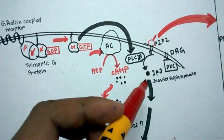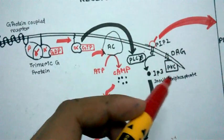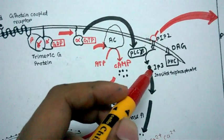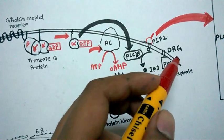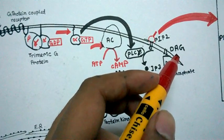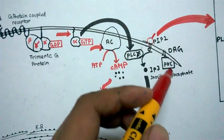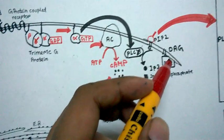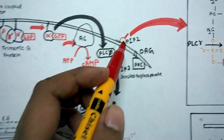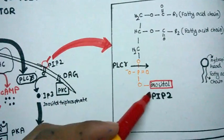Phospholipase C beta will cleave PIP2, phosphatidylinositol bisphosphate, into IP3 and DAG. IP3 is inositol triphosphate, another important second messenger. DAG is diacylglycerol, another second messenger important for activation of protein kinase C.